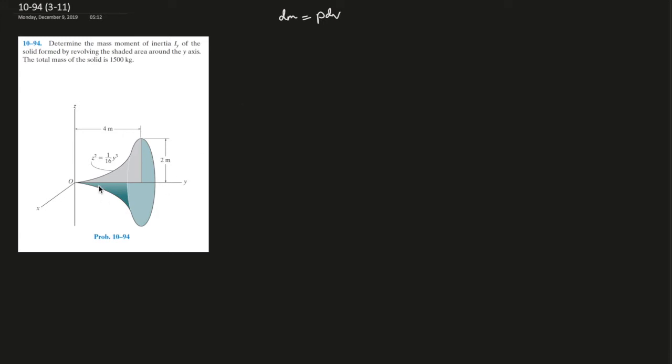Alright, so what is dv, right? dv is the volume of this shape. So how do I find that, right? Well, if you look closely, it's actually dy, for example, like one little square over here, right? dy, it goes around a circle, right? By 2π radius. So it's π times r squared.